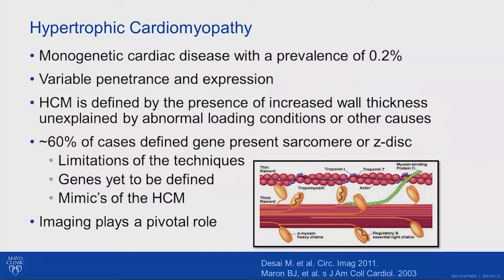Variable penetrance and expression make this difficult to follow because it doesn't always express itself the same, even though the same gene may be present in the same family member. You could have one family member with the reverse curve hypertrophic cardiomyopathy, another with the apical variant, and they have the same gene — so it really doesn't explain the morphology that we see. Hypertrophic cardiomyopathy is defined by increased wall thickness of greater than 15mm, unexplained by abnormal loading conditions or other conditions, and that's where we'll spend the emphasis of this talk.